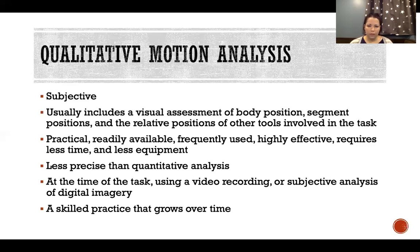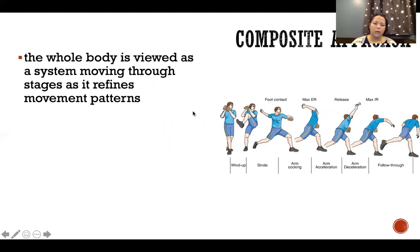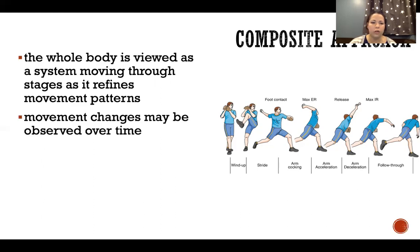Qualitative motion analysis skill develops gradually over time with practice, mostly through doing quantitative motion analysis, which we'll talk about in a separate video. There are a couple of different approaches in qualitative motion analysis. One is the composite approach — the whole body is viewed as a system moving through stages as the person is refining their movement patterns and learning whatever that task or action is. Movement changes are observed over time as you go through stages of learning.